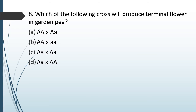Question No. 89: Which of the following crosses will produce terminal flowers in a garden pea? The correct answer is Option C — Capital A, small a crossed with Capital A, small a (Aa × Aa).